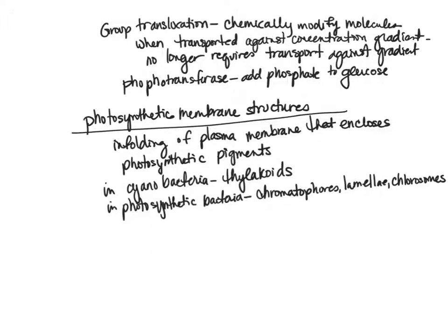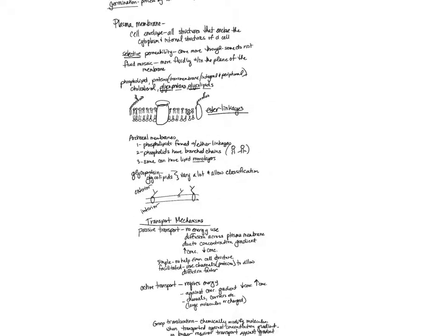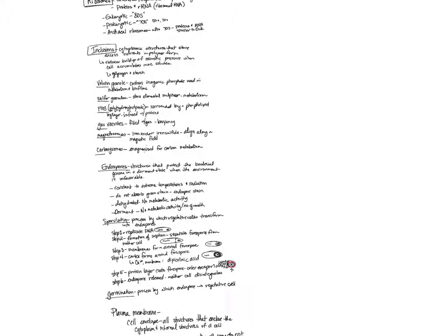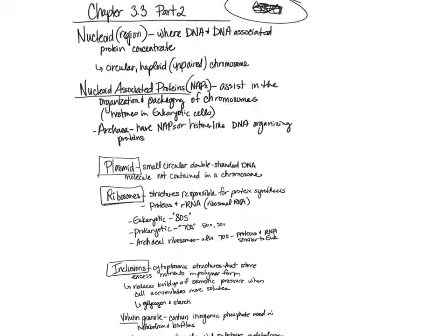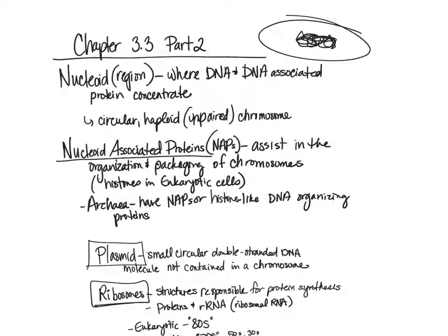To wrap up, we talked about the plasma membrane — its permeability, differences in archaeal membranes, transport mechanisms, and photosynthetic structures. We also covered endospores and the sporulation process, the different types of inclusions, ribosomes, plasmids, and the nucleoid region. In the next section we'll finish chapter 3.3 with a closer look at the cell wall and other cell structures.